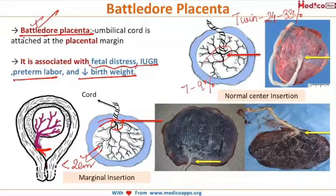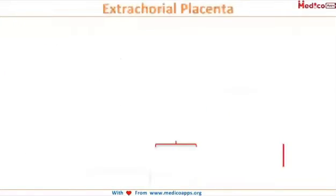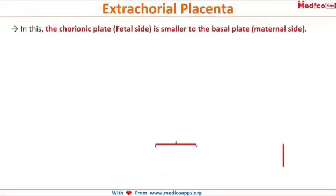The next type of placental abnormality is extra chorial placenta. Normally, the chorionic plate — the fetal side — and the basal plate — the maternal side — are equal in surface area. But if the fetal side is smaller than the maternal side, it is called extra chorial placenta.